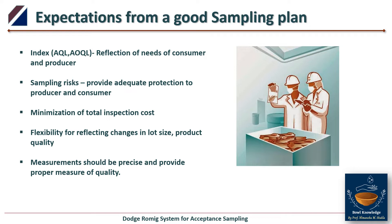A good sampling plan should have minimum total inspection cost, since inspection involves some cost. It should also have flexibility for reflecting changes in lot size and product quality, and measurement should be precise and provide a proper measure of quality. These are the key expectations from a good sampling plan, and all efforts in designing one aim to meet these criteria.